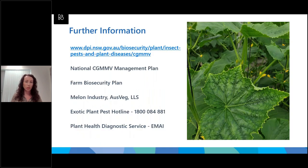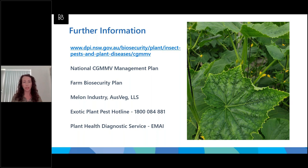There are a few different places you can get more information. The DPI website has a fact sheet and will also be hosting this webinar. There's the National CGMMV Management Plan available online. There are various farm biosecurity plans and CGMMV-specific ones developed as well. If you don't have a biosecurity plan, get one; if you do, now is the perfect time to review it. Organisations you can reach out to for support include the melon industry, Ausveg, local land services, and NSW DPI. The exotic plant pest hotline is 1800 084 881. You can always send samples into our plant health diagnostic service at EMAI.